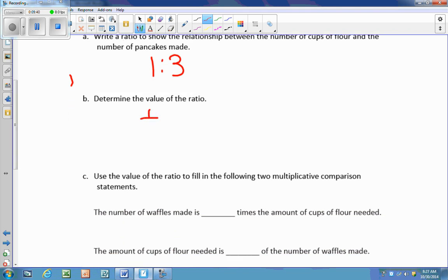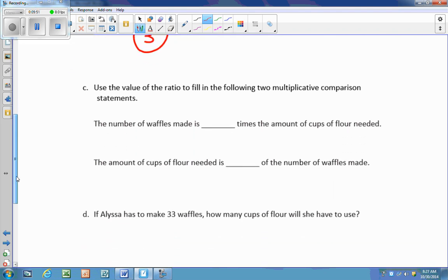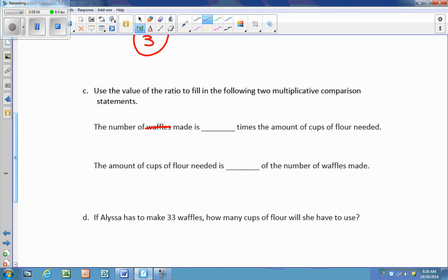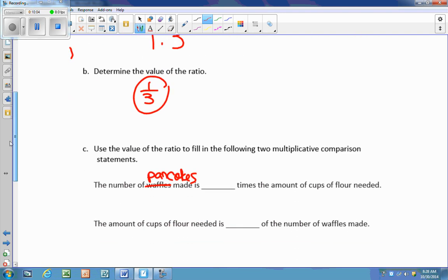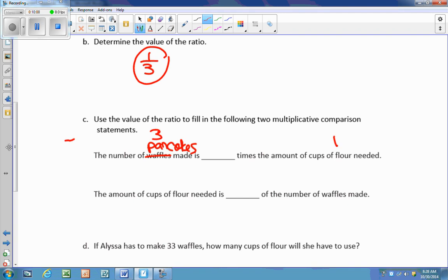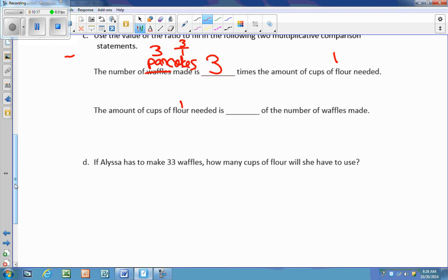And this is where you're putting it into a fraction and making it into the smallest value possible. So I cannot reduce one third because both one and three are prime. So that is my value is one third. Now I'm going to use that value to help me fill in these statements. The number of pancakes made is blank times the amount of cups of flour you need. So if I have pancakes, it's for every three pancakes, it's one cup of flour. So that gives me the ratio of three to one, which then simplifies to just three.